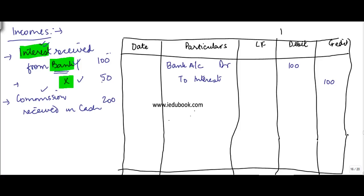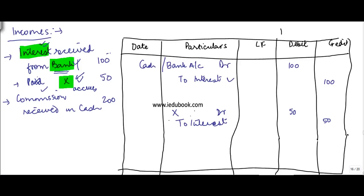Now instead of bank, if X would have paid you interest — if he has paid you, then obviously you would have received cash or check, so instead of bank you will have cash. But if it is not paid and X accrues interest, then you have a receivable from X. X is my debtor, X is an asset, so the balance from X increases. Therefore I debit X by 50 and I credit interest by 50.